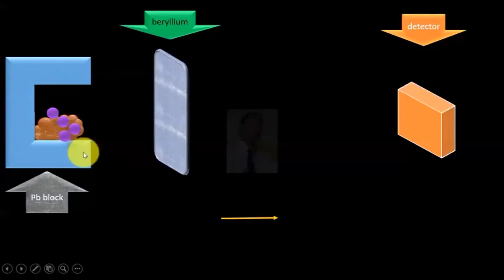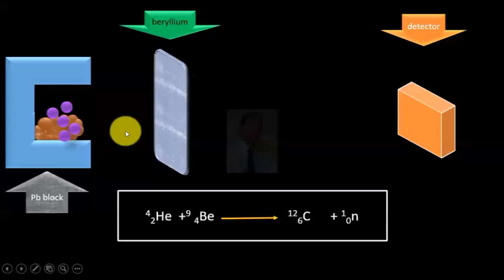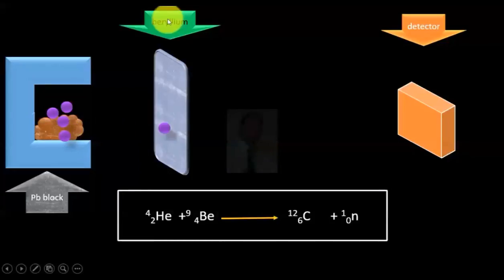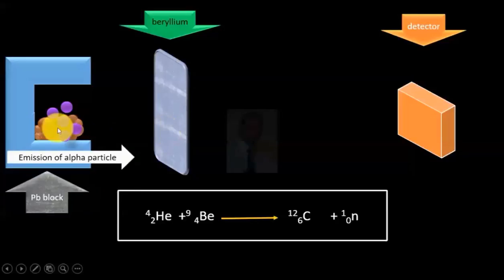This end is open so that radiation could go in only one direction. When a beryllium material was kept in front of these radiations, this polonium is a source of alpha particles.